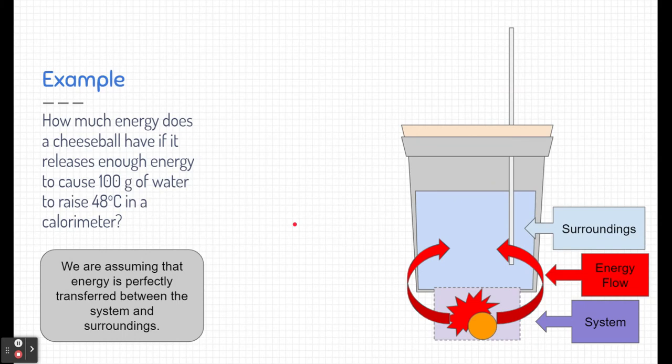We're going to assume that all of the energy is perfectly transferred between the system and the surroundings. If we're using the more professional calorimeters, this is more likely what's going to happen. And the DIY calorimeters, maybe not so much, but it's okay. This is just high school chemistry, and we're just going to assume that all energy is perfectly being transferred.